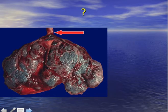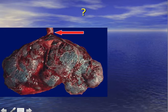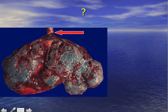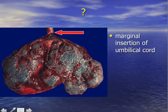Here is another variation. You can see the main placenta shortly after delivery, and the umbilical cord starts not in the center of the placenta but at the margin — that's why it's called a marginal insertion of the umbilical cord. The risk here would be that in the third stage, when we do controlled cord traction, the placenta might separate from the umbilical cord.